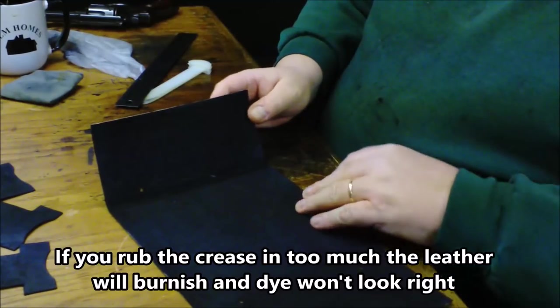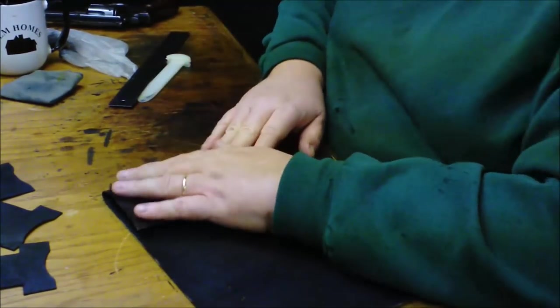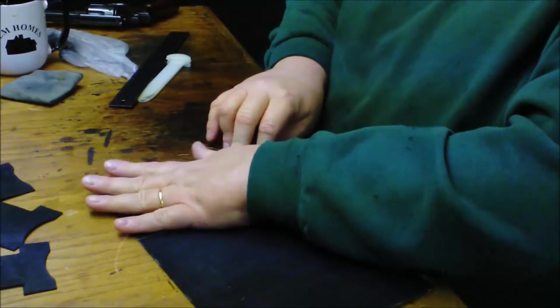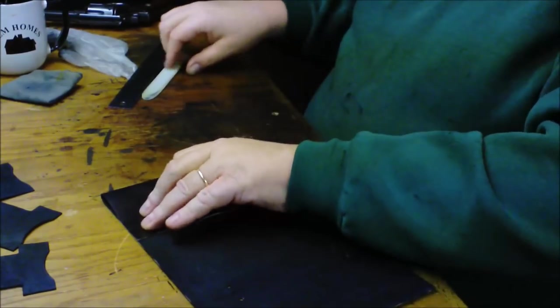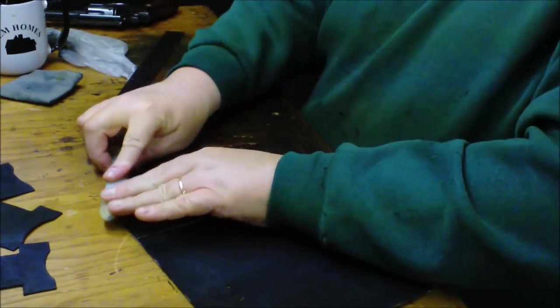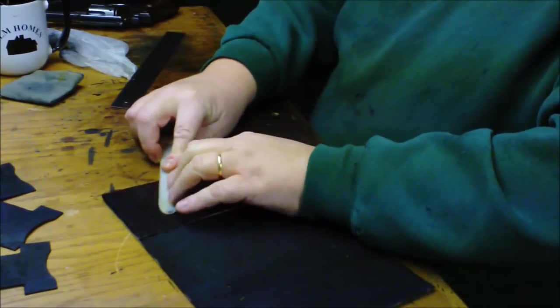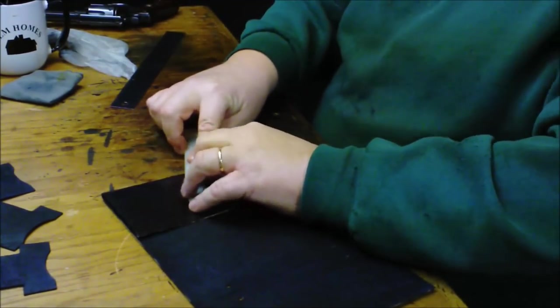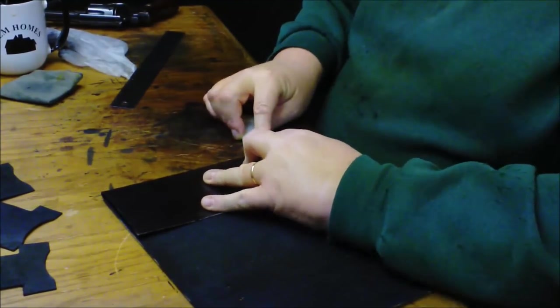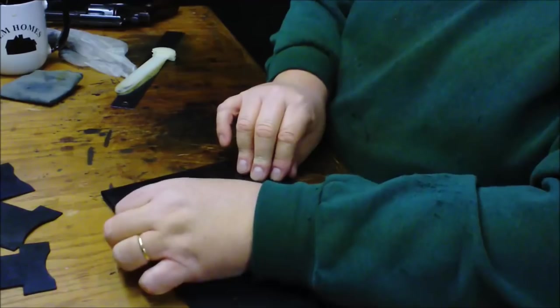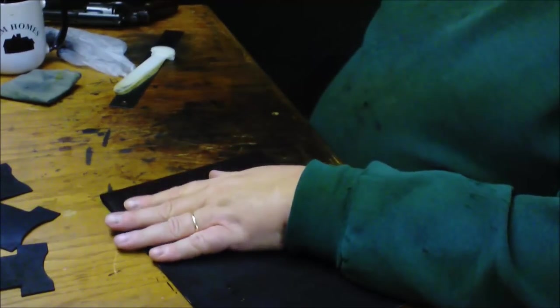So now you can see it's kind of creased up. Fold it the rest of the way over. Now I don't want to rub this any more than I have to, so I'm just kind of going to press it down. Now I still have snaps to install and stuff like that, but I want to establish these folds before I get too far along on the project.